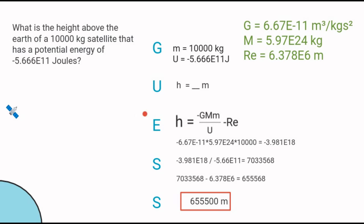This is the equation we just rearranged. I'm breaking it up into steps. First, the gravity constant times the mass of the Earth times the mass of the satellite gives us negative 3.918 times 10 to the 18th—a very large number on top.